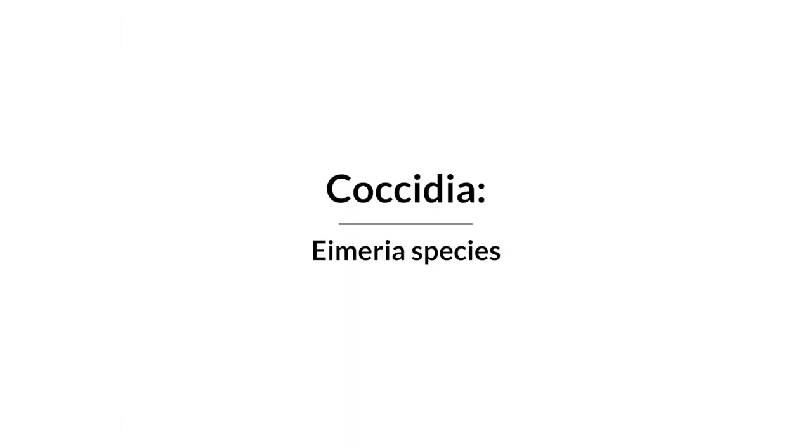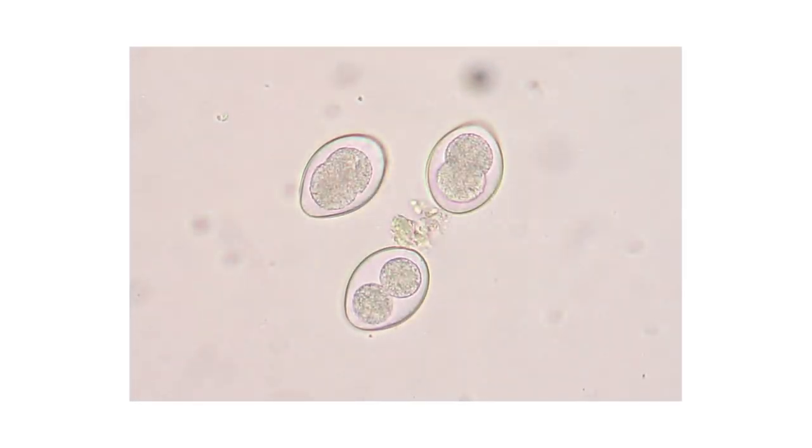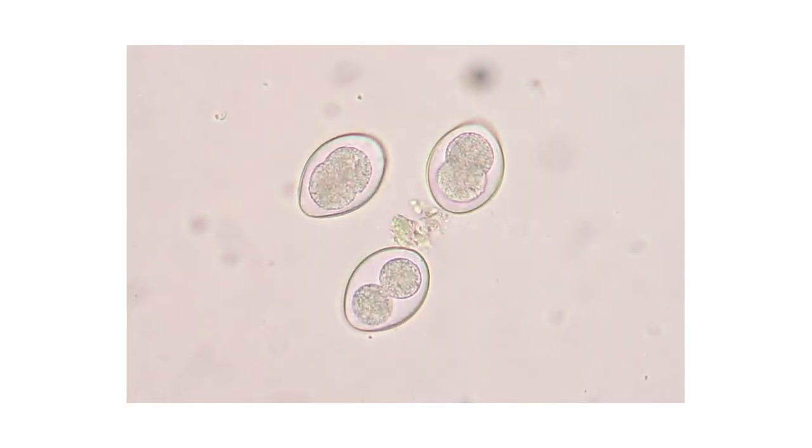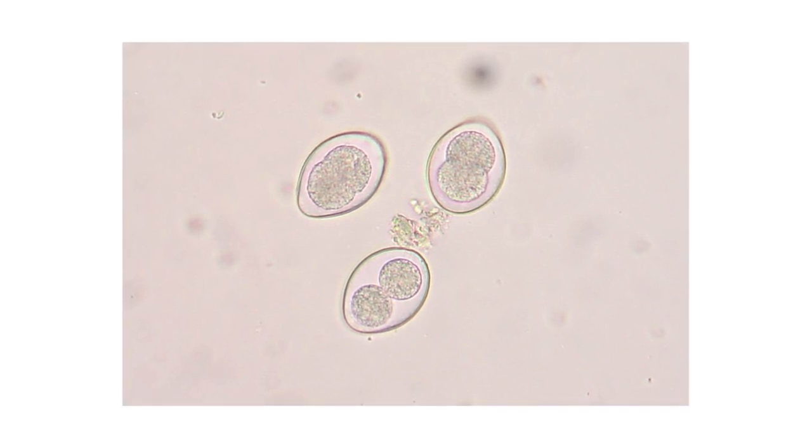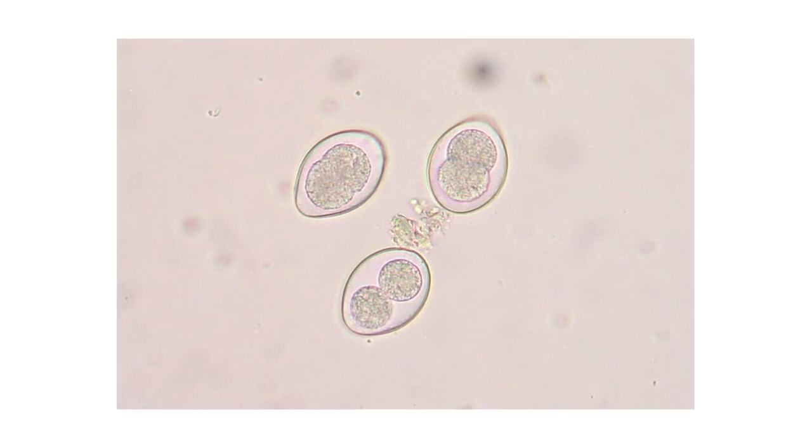Coccidia, Eimeria species, are microscopic parasites that live in the gut. There are several different species that vary in the severity of disease and generally affect young birds. Birds develop immunity to specific species of Coccidia once they've been exposed and recovered.